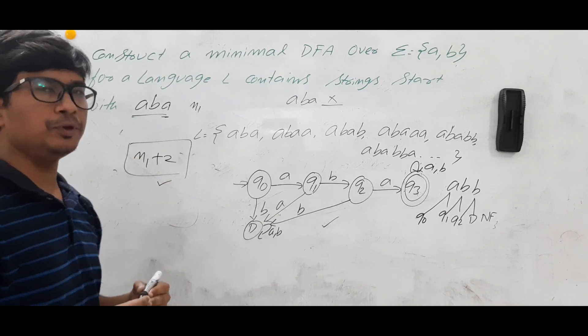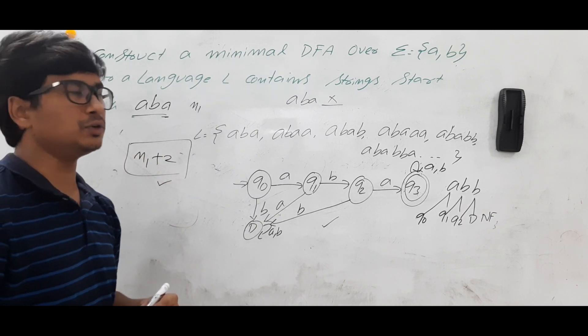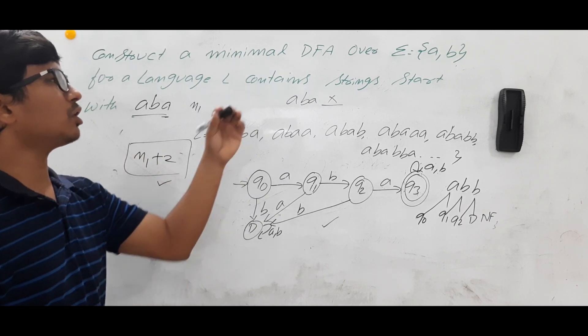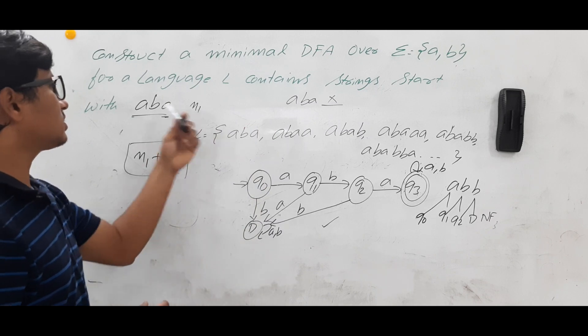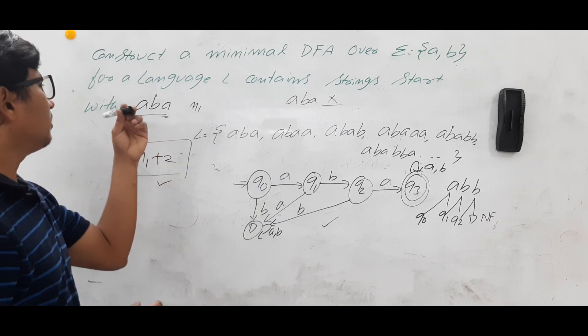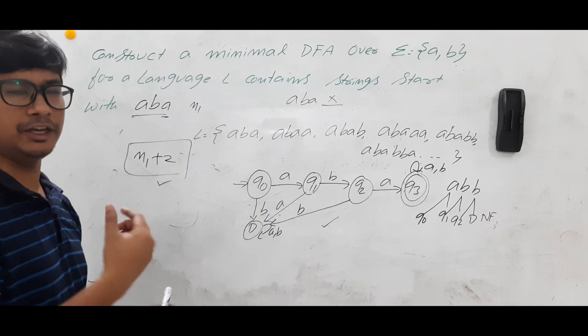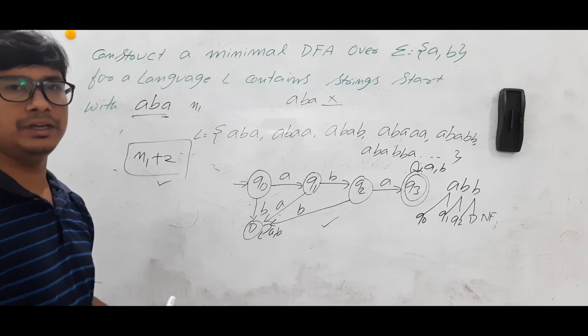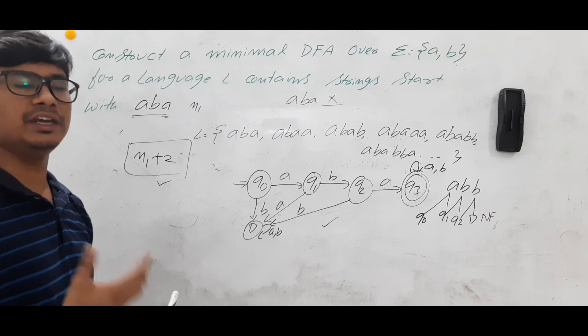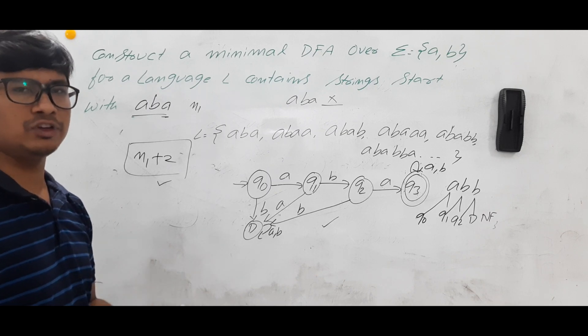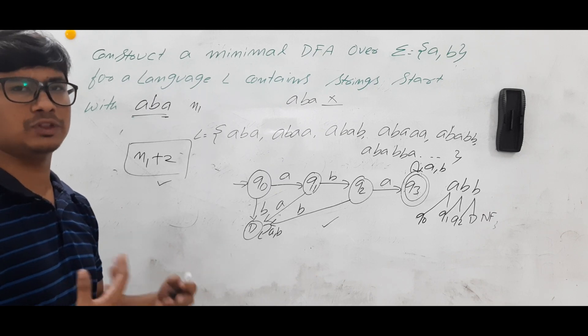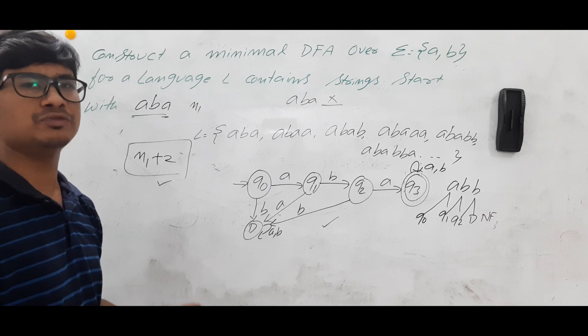Remember: ABA is a substring of length 3, and the formula gives N plus 2 states for the minimized DFA. In the GATE exam, they will mostly ask you to find the minimum number of states rather than construct the full DFA. If a string starts with a substring of length N, the minimum number of states in the DFA is N plus 2. Please practice with more examples for better understanding.